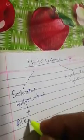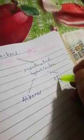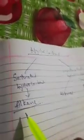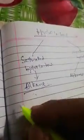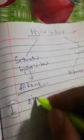Saturated hydrocarbons are called alkanes. Unsaturated hydrocarbons are of two types: alkenes and alkynes. We will see in detail what alkenes and alkynes are. Let us first talk about alkanes.